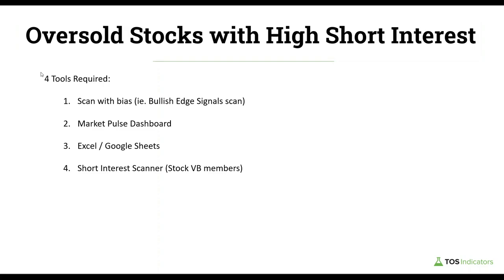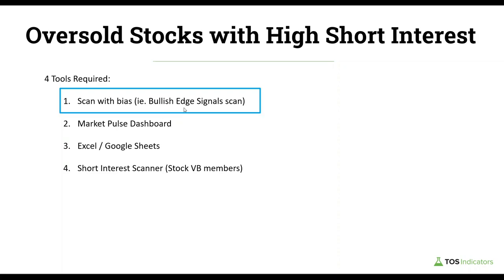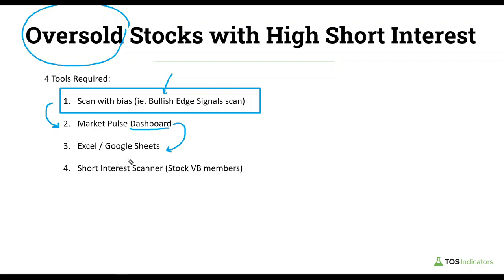If you'd like to follow along, you'll need four simple tools — most of these are free. The first is having a scan with some sort of directional bias; this is really key as our starting point. For all of our volatility box members, we're going to be using our bullish edge signal scan. This gives us our directional bias (bullish) and our edge signals indicator provides the oversold condition criteria. Once we have that list, we'll use our new market pulse dashboard — created in yesterday's tutorial — to narrow down the list of roughly 50-plus stocks in less than one second.